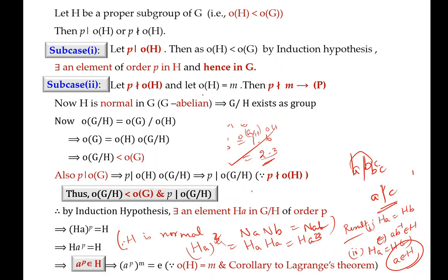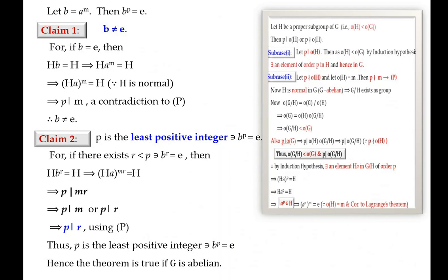Remember the order of H is taken as M. By a corollary to Lagrange's theorem, since A^P belongs to H and the order of H is M, we have (A^P)^M = E, the identity element in G. Now if we name A^M as B, then A^(MP) = B^P = E.